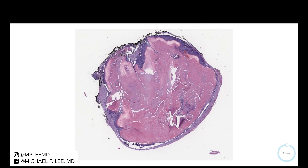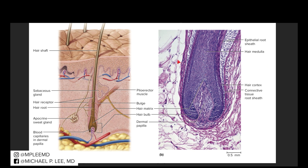Whenever I look at these things, I like to look at what the actual structures are. So this is a diagram of a hair follicle. This is your skin, this is a hair shaft, and at the base we have the hair matrix. Here it is on H&E, and you can see that these cells are very basophilic, very blue in color. The hair matrix gives rise to the actual hair shaft as well as the inner and outer root sheath.